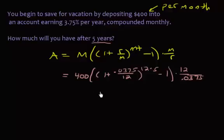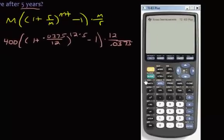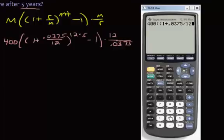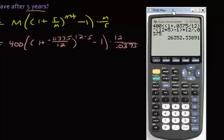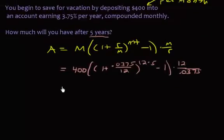All right, so let me pull out that calculator again, and we will compute this. So it's going to be 400, two parentheses, one plus .0375, divided by 12, so I'm going to skip ahead. All right, and we press enter, and we'll get $26,352.39, so let me write that down. We have $26,352.39.